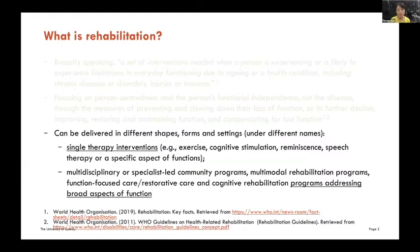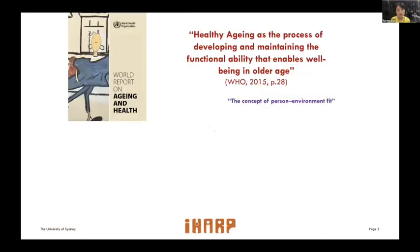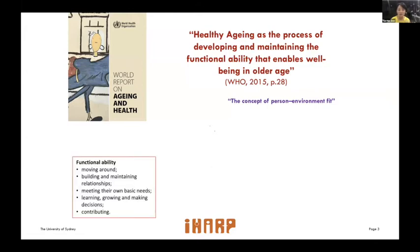Before I talk about what we have found in our review, I just want to bring your attention to this definition of healthy aging. Healthy aging is the process of developing and maintaining the functional ability that enables well-being in older people. You can see the striking resemblance between this definition and rehabilitation. Functional ability here is about moving around, building and maintaining relationships — so it's not just about physical mobility, it's about social relationships as well, meeting basic needs, learning, growing, making decisions, and contributing.